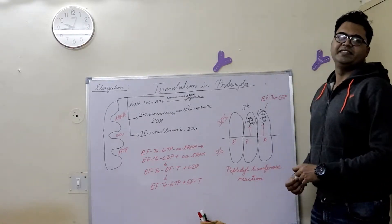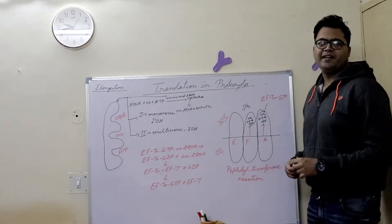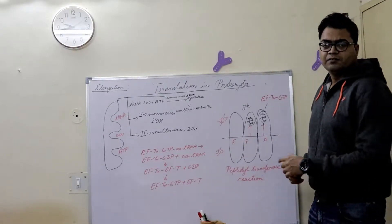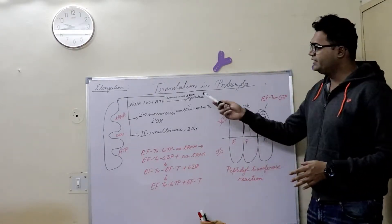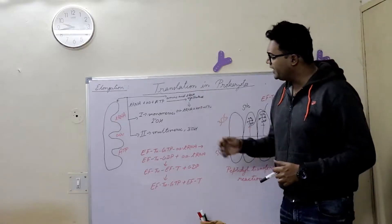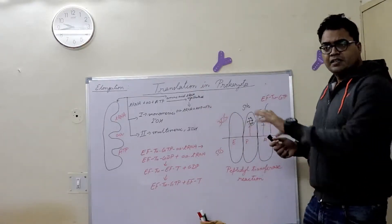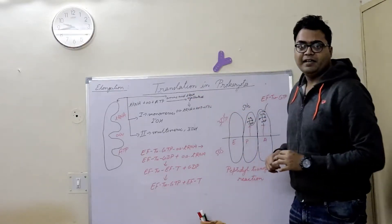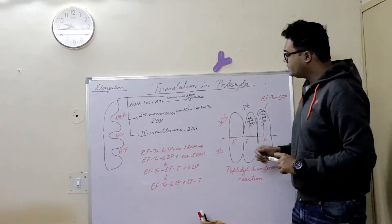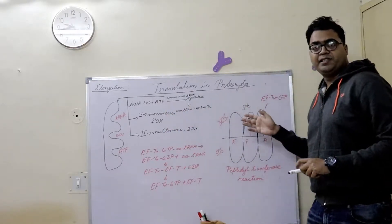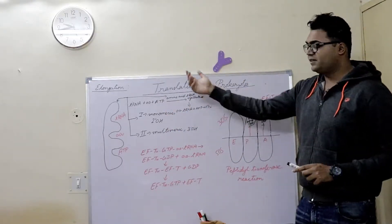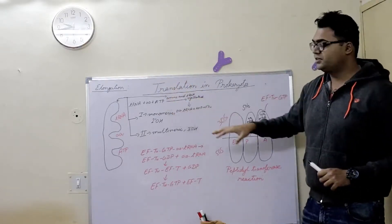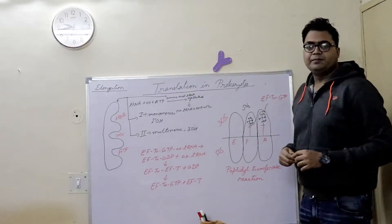Hello friends, welcome to Biology Made Easy. Today I'll be bringing you the second part of translation in the prokaryotic system, known as elongation. We have already dealt in depth with the initiation pathway, where I described the molecular dynamics of initiation, how IF1, IF2, and IF3 work, and how the formyl-methionine tRNA is formed. Those things were covered in the initiation part.